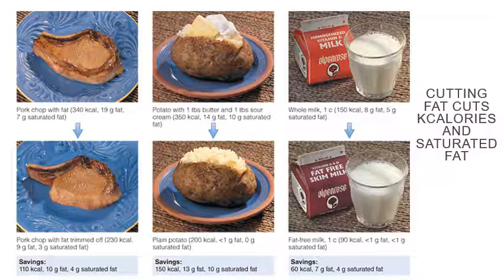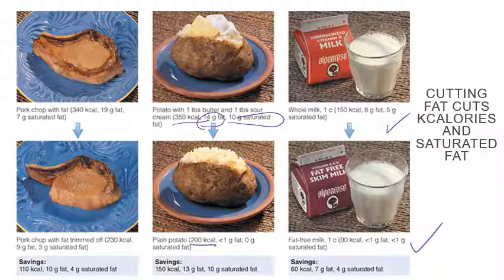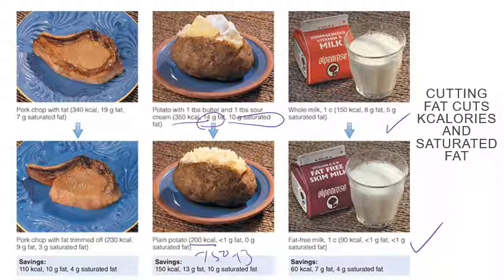Remember we mentioned milk earlier. Now let's talk about potatoes. When you have a baked potato with butter and sour cream, you're consuming 14 grams of fat, 10 grams of saturated fat, and 350 calories. Versus if you skip the butter and sour cream, you have 200 kilocalories — 150 fewer calories, 13 fewer grams of fat, and about 10 fewer grams of saturated fat.